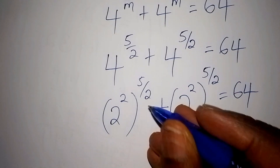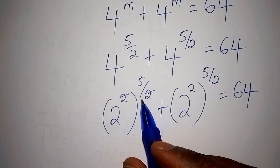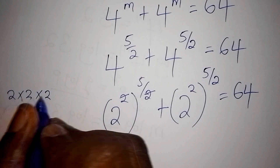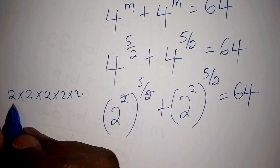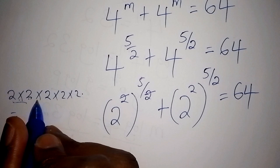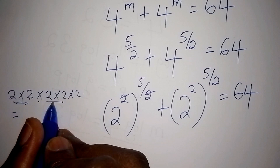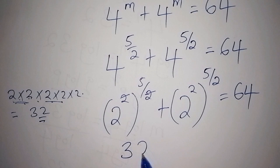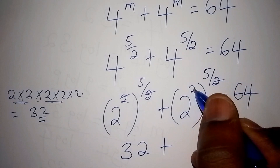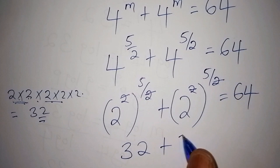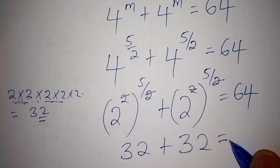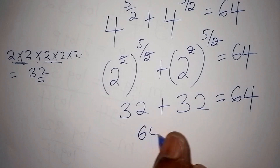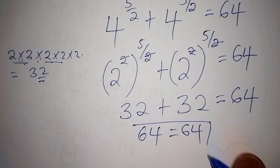Multiplying the indices, 2 times 5/2 gives 2 to the power of 5. Working out 2 to the power of 5: 2 × 2 = 4, × 2 = 8, × 2 = 16, × 2 = 32. So 2 to the power of 5 is 32. Therefore we have 32 plus 32, which equals 64. This confirms our answer is correct.